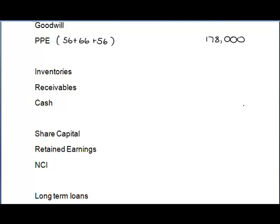Inventories: add them together — 44 plus 45 plus 25 — giving an inventories figure of 114, though there's a note reference so adjustments may be required. Receivables come to 86, again an adjustment might be needed. For cash in hand there appear to be no adjustments: 8 plus 6 plus 3 gives us 17.